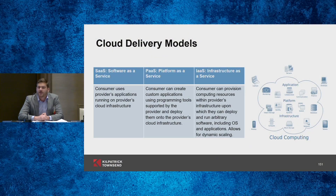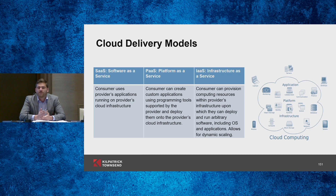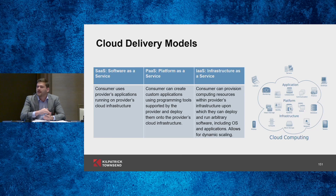The different cloud delivery models: you have software as a service, which is when you're using the service provider's application — they've designed everything about it and it rests on their infrastructure. In addition to that, you have platform as a service, which gives you a little more customization to design your own applications that can sit on top of the service provider's infrastructure. And then you have infrastructure as a service, which allows you to run and deploy your own code, including operating systems, and allows you to scale a lot more infrastructure into a cloud provider's environment.